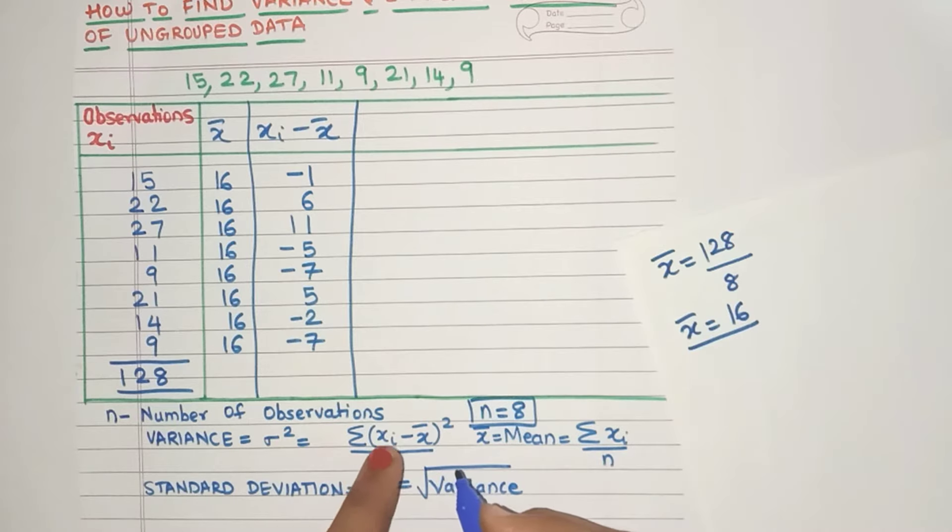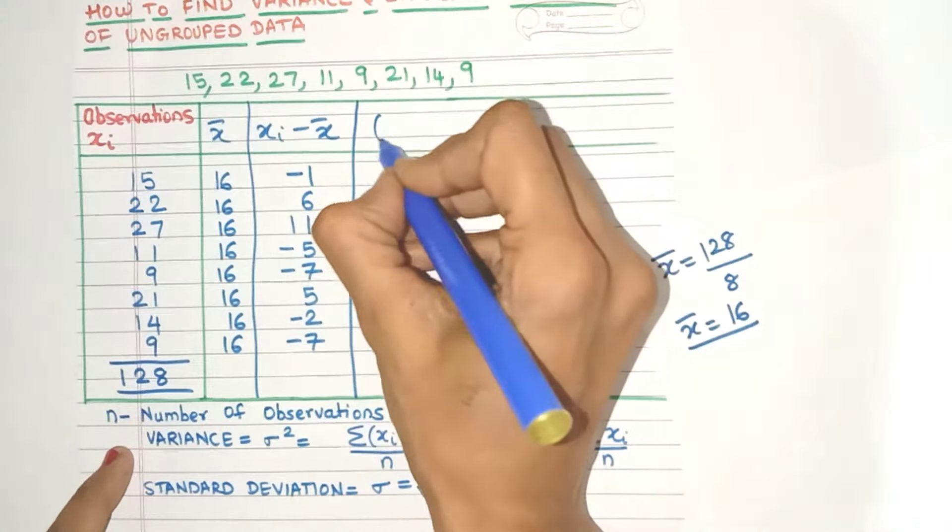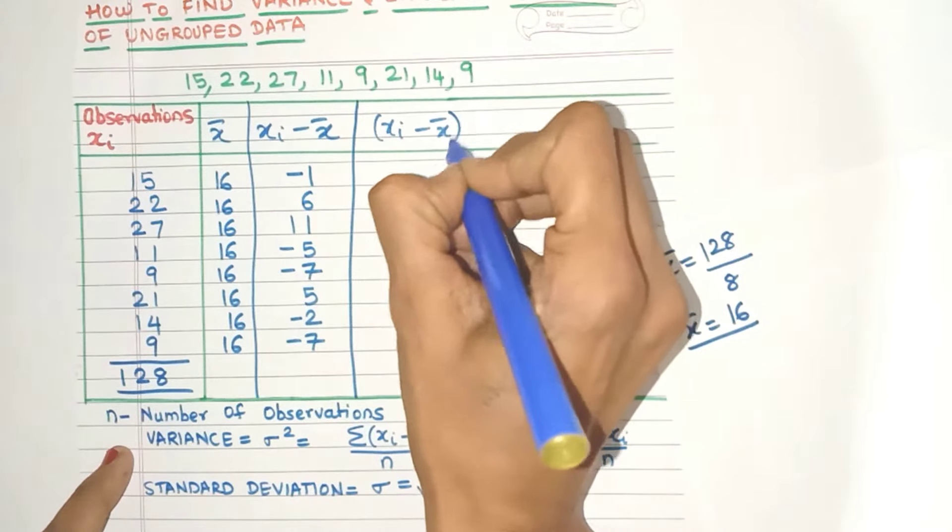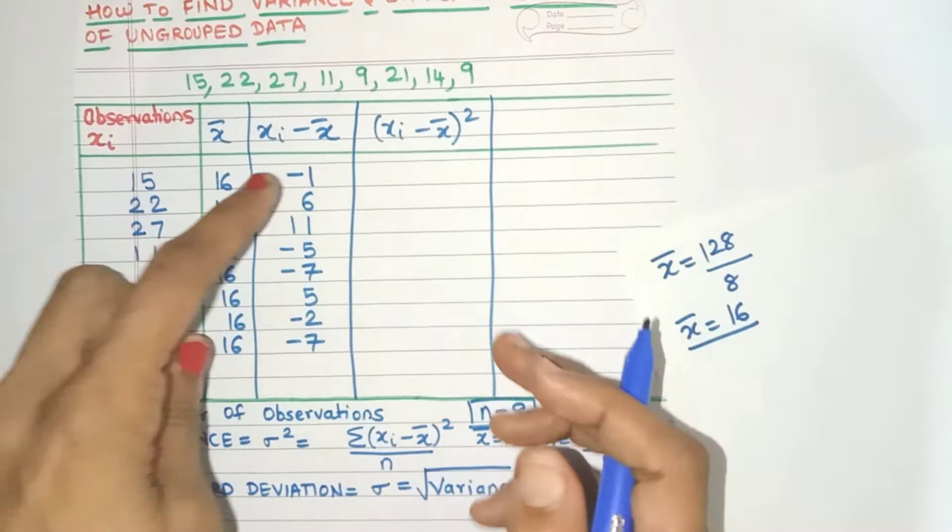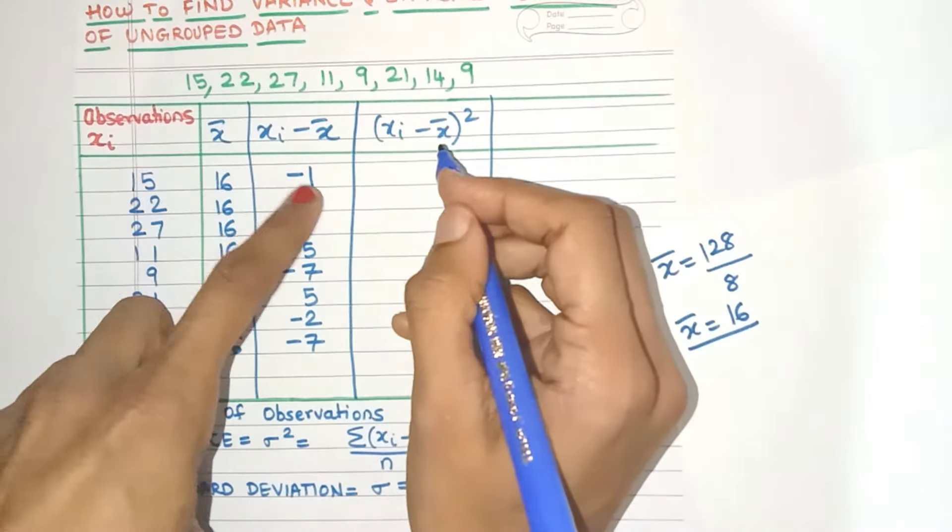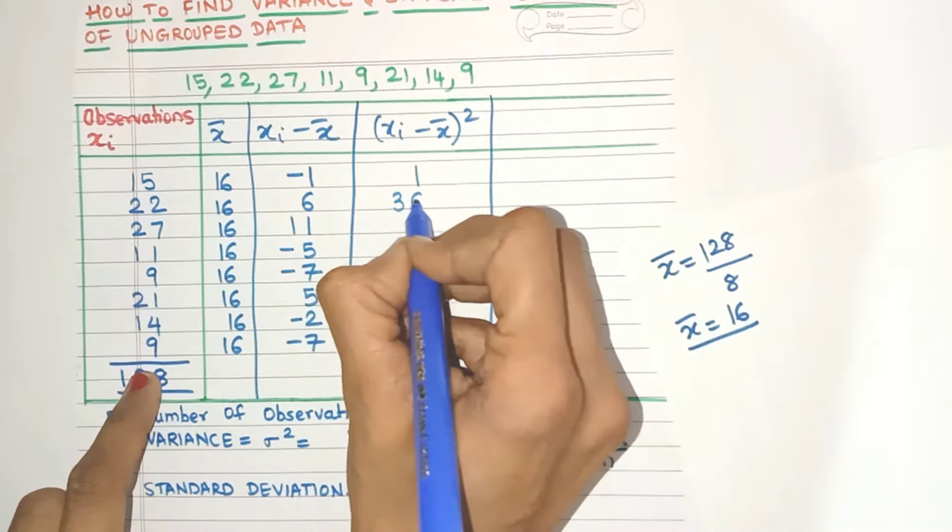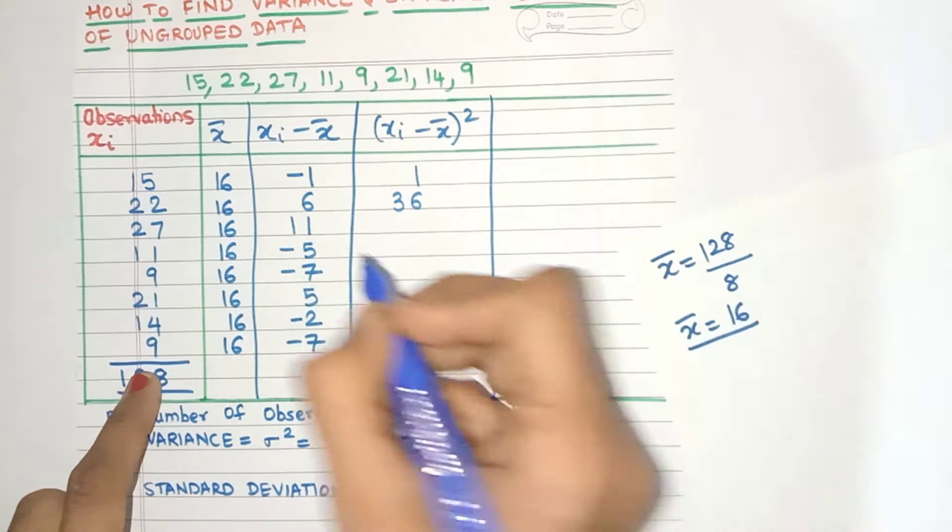Let's check the formula. We need xi minus x̄ the whole square. So that's our new column (xi - x̄)². So remember whenever we square, what happens? The minus becomes plus. So minus 1, the whole square is 1. Here also, just make sure that you write the digits one below the other.